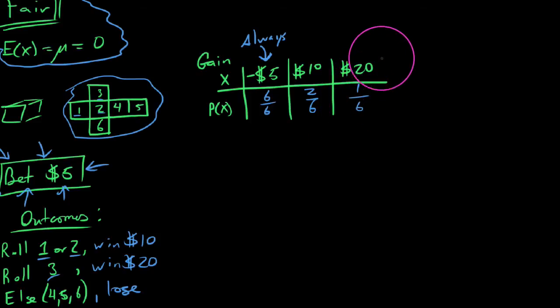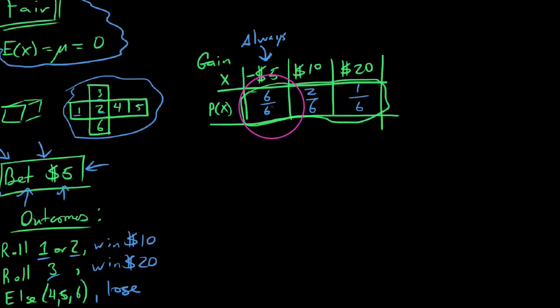So one disclaimer I want to throw out there is this. Technically, with probability distributions, we say that all of your probabilities should sum up to be 100%. And if you look at this, you say 6/6 plus 2/6 plus 1/6 is 9/6. That's more than one. But the reason why is because we're saying that you always lose this $5. Without having to build in net winnings, I'm just going to say we always lose the $5.